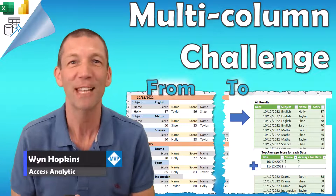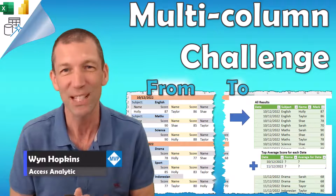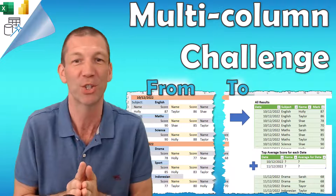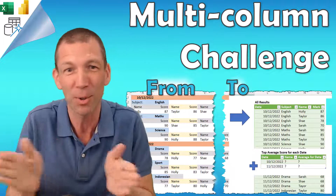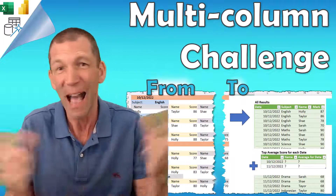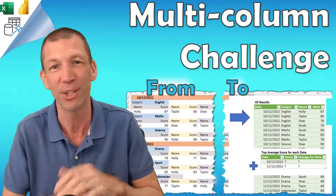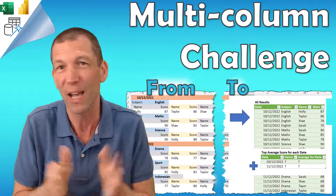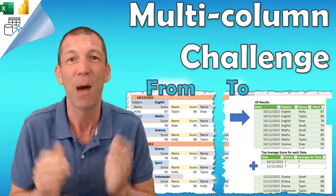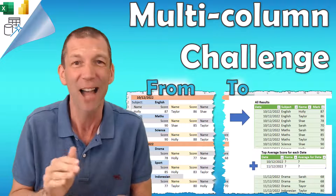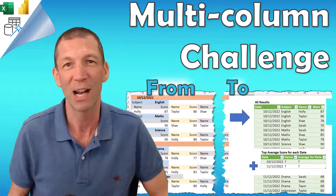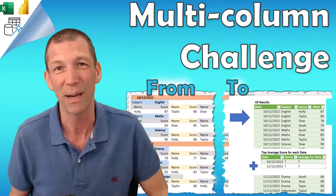In the final challenge of 2022, we have the Schools Out challenge with multiple columns for different people. We want to work out, out of the friends Holly, Taylor, Shea and the others, who's got the highest average score and what are their individual scores. We can use Power Query to tidy up this messy data. Check out all the other Power Query challenges in the playlist for 2022.